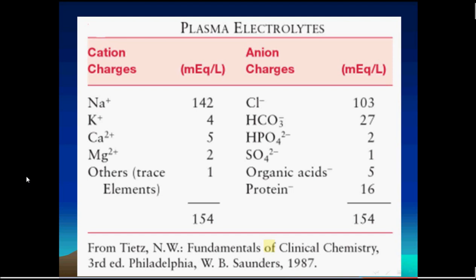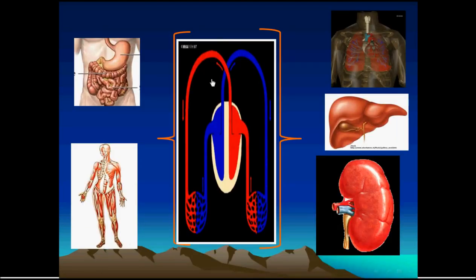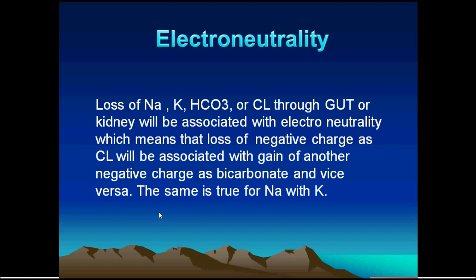These positive and negative charges within the extracellular fluid are maintained by the integrity of several systems: the gastrointestinal tract, which is meant for absorption; the respiratory tract, which is the lung, meant for excretion of carbon dioxide; the liver, which is meant for the metabolism of protein; and the excretory functions of the kidney, in addition to the role of the skeletal systems and buffering systems in maintaining the extracellular space.